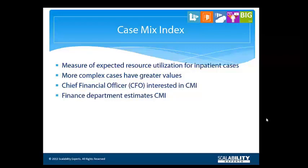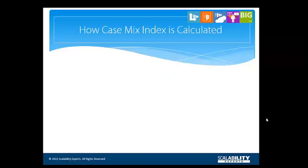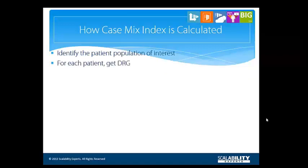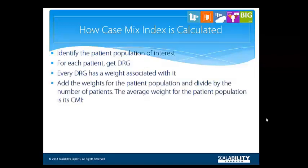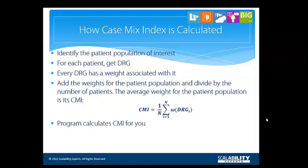A large CMI is a matter of prestige and may even be a driver of market share for a hospital. Here's how it's calculated: identify your patient population, get the DRG for each patient, and add all the associated relative weights. Now divide by the number of patients in your population. A CMI can be computed for an entire hospital based on its entire patient population, or any group of patients.